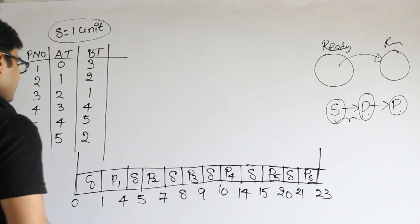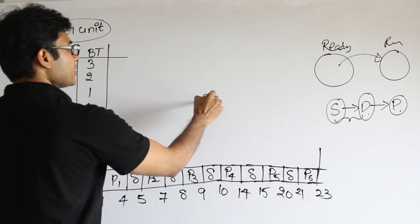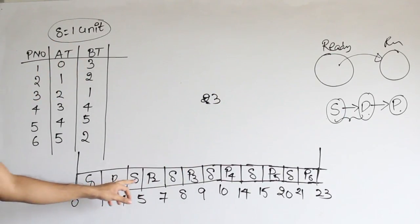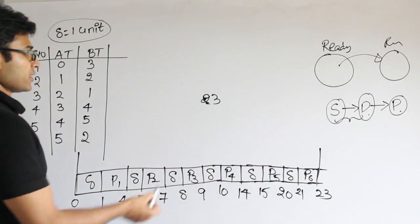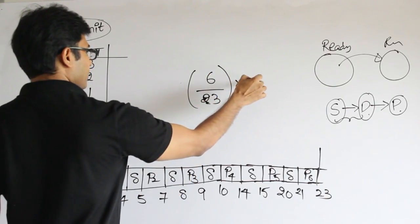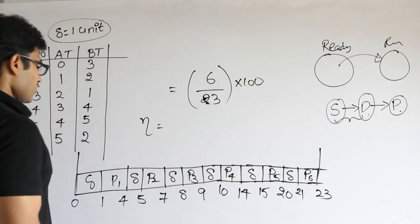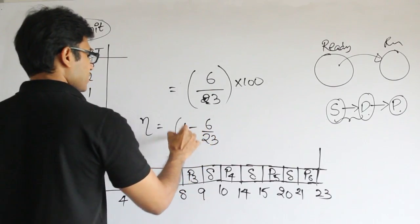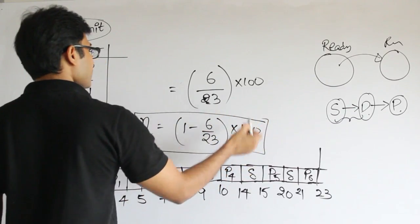This is the complete schedule. The total schedule length is 23 — from time 0 to 23. Out of this, the useless time is the overhead time. There are six overheads in total, so the inefficiency is 6/23. Multiply by 100 for percentage. The efficiency is the remaining useful time: 1 minus 6/23, i.e., 17/23.